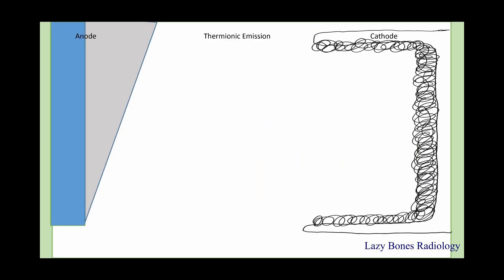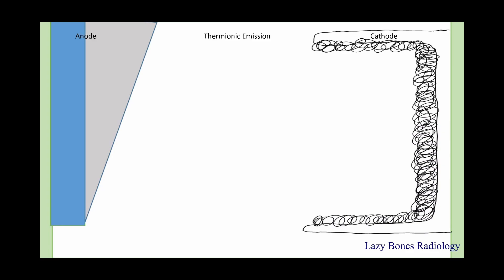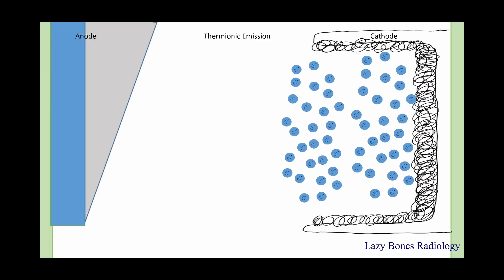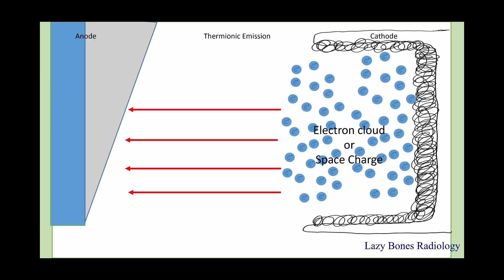Now let's look at how thermionic emission works. As the filaments start heating up, they start releasing electrons. When you have a sufficient amount of electrons — the satisfied amount that you want — this is known as the electron cloud or the space charge. Once we have the satisfied amount of electrons, we accelerate them using a current in order to hit the anode. This is where the x-rays happen.